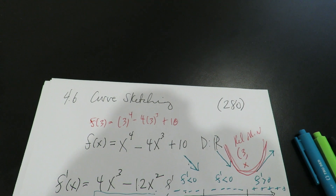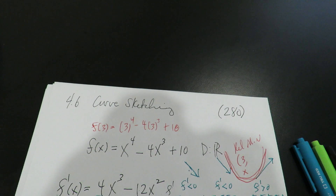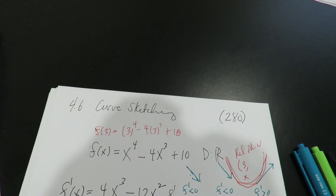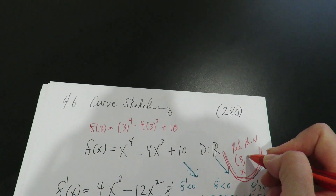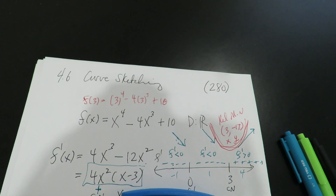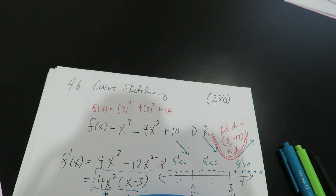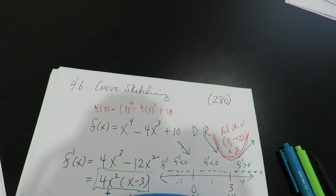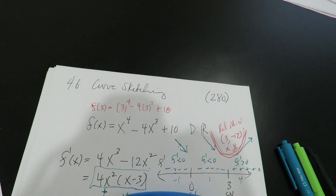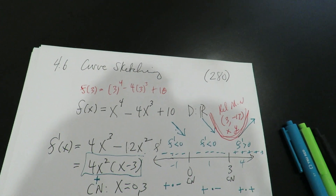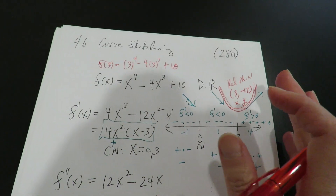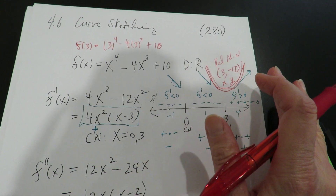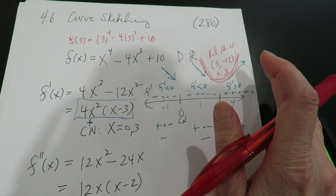So I need to find the y-value at x equals three by plugging into the original function. Three to the fourth is 81, minus four times 27, plus 10. That gives me negative 17. Let me check: 4 times 27 is 108, and 81 minus 108 plus 10 is negative 17. I'm getting negative 17 twice, so I'm happy with that. The relative minimum is at the point (3, -17). That's all the data I can gather from the first derivative.